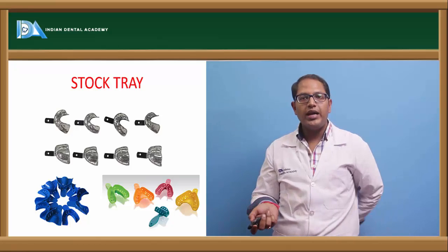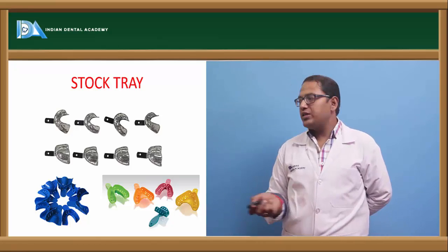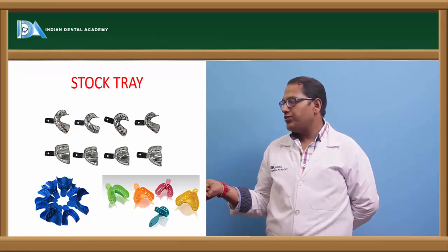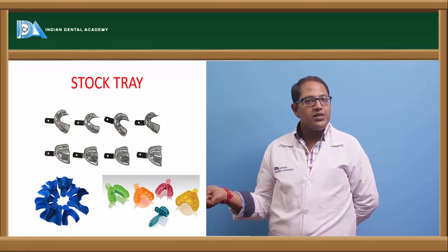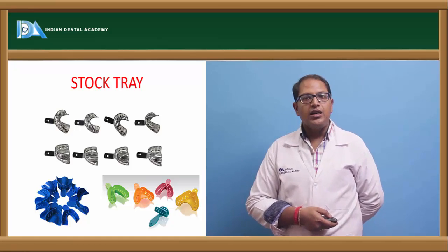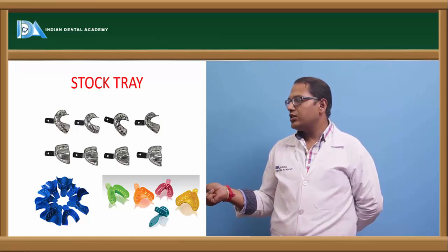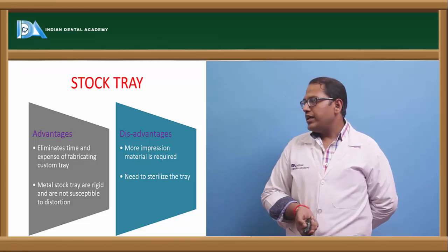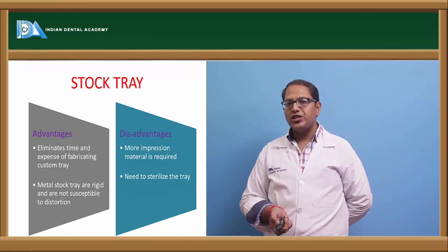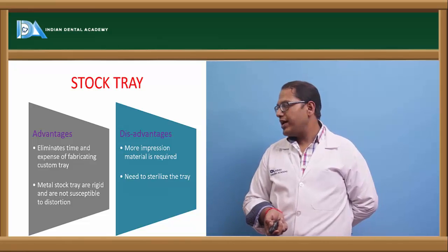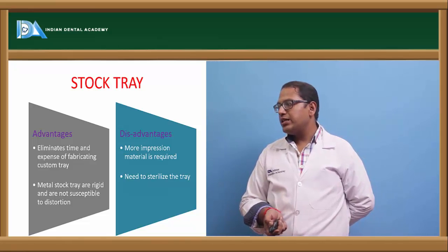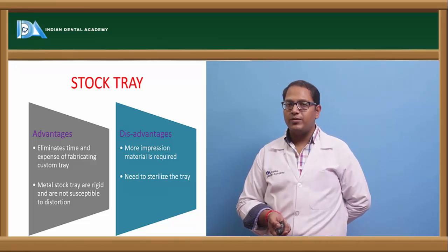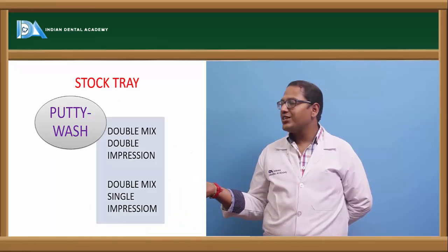A stock tray is a tray which is in stock — it is for every patient and is not customized. It can be metal or plastic. The disadvantage of plastic stock trays is that autoclaving is a problem, whereas sterilization and autoclaving of metal trays gives good results. Advantages include eliminating time and expense for fabrication of a custom tray. Metal stock trays are rigid and not susceptible to distortion, whereas disadvantages are that more impression material is required and the tray needs to be sterilized.